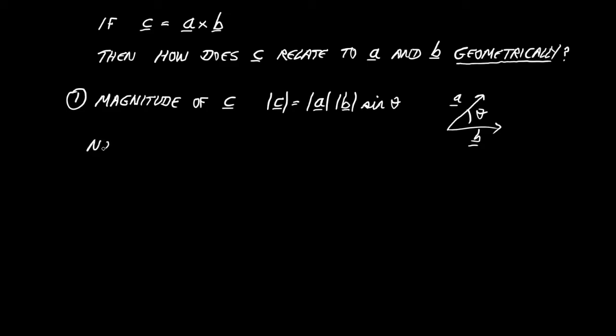So there we are. There's our two vectors, A and B, and an angle between them. And from those magnitudes, the lengths of those two vectors and the angle, we can work out the magnitude of C. Note that if we cross a vector with itself, the angle will be zero, and so the cross product will be zero, just as we've already seen in our examples.